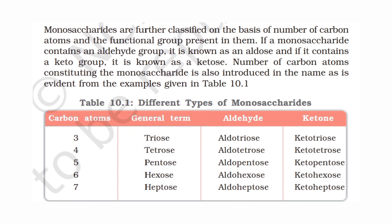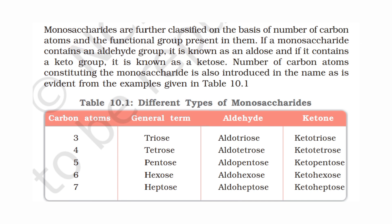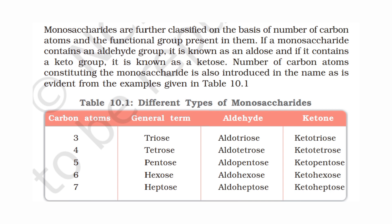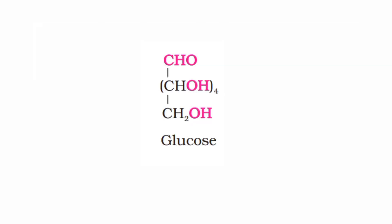Monosaccharides are classified based on the number of carbon atoms: 3-carbon compounds are triose, 4 is tetrose, 5 is pentose, 6 is hexose, and 7 is heptose. Based on functional group, they are classified as aldose (aldehyde group) or ketose (ketone group). Glucose is an important aldohexose — it has an aldehyde functional group and is a 6-carbon compound.